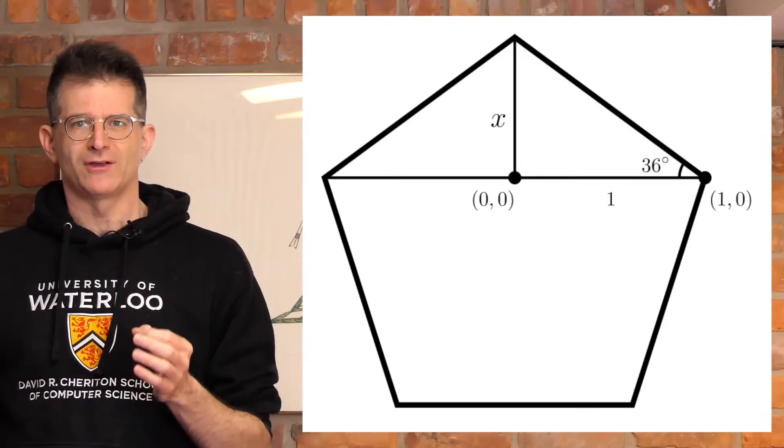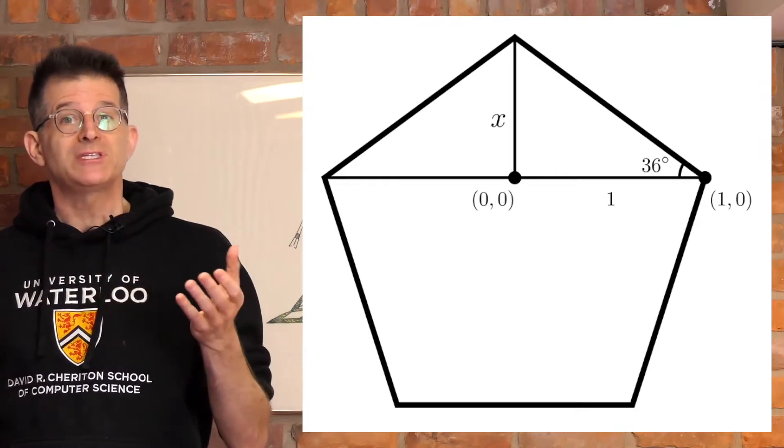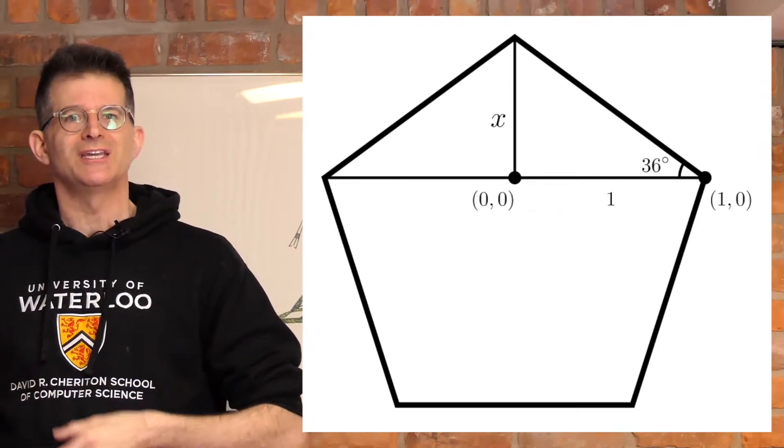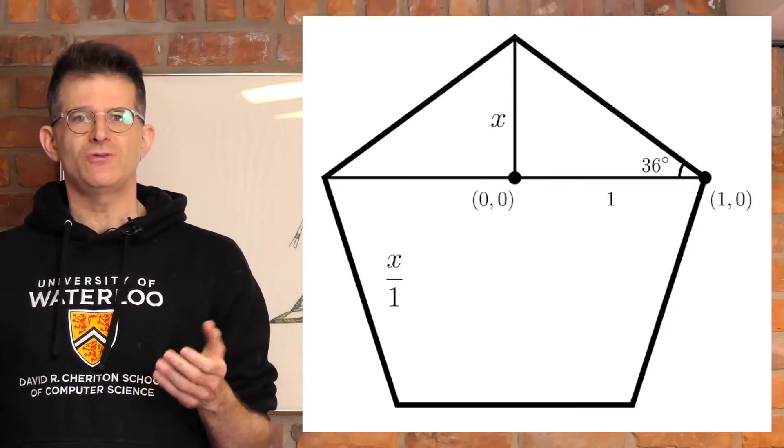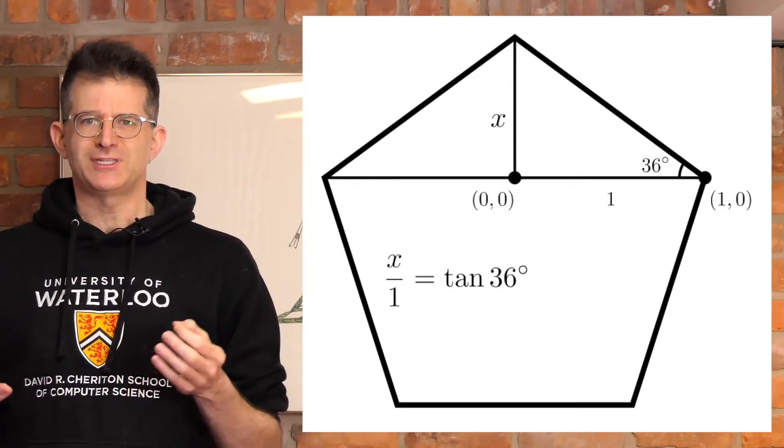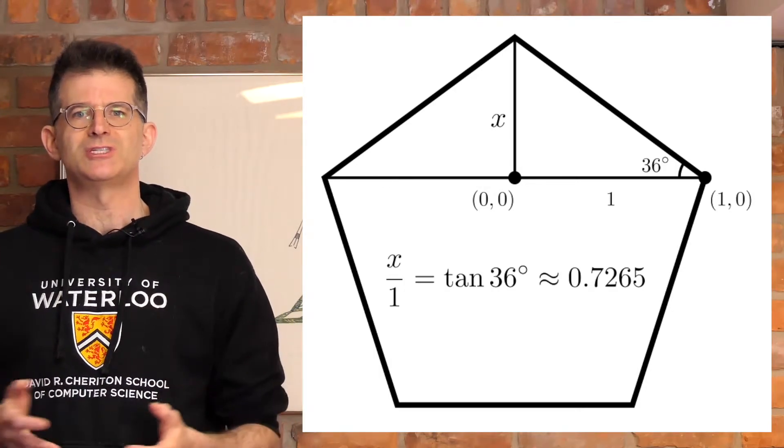That means that the triangle's other two angles are both 36. And now I can use the tan function to figure out how tall that triangle is. Because tan is opposite over adjacent, which in this case is x over 1. And I know that it's 36 degrees, so x has to be tan of 36, which is approximately 0.7265.